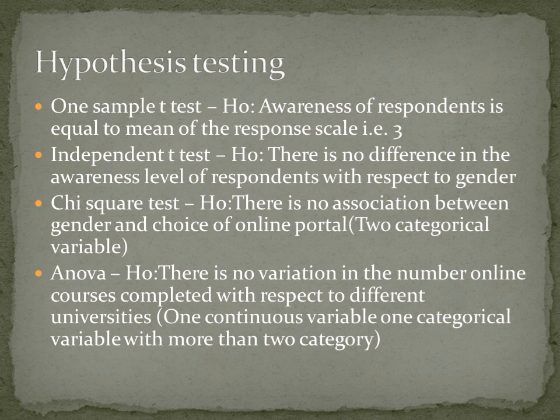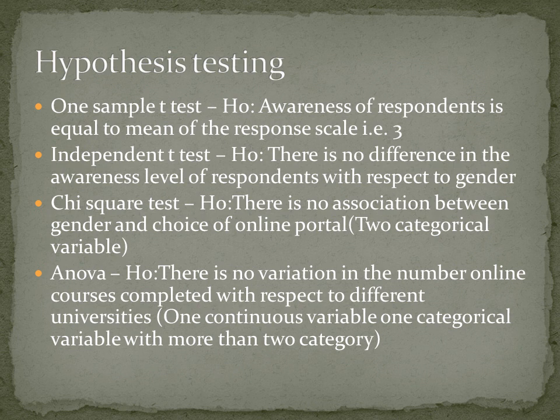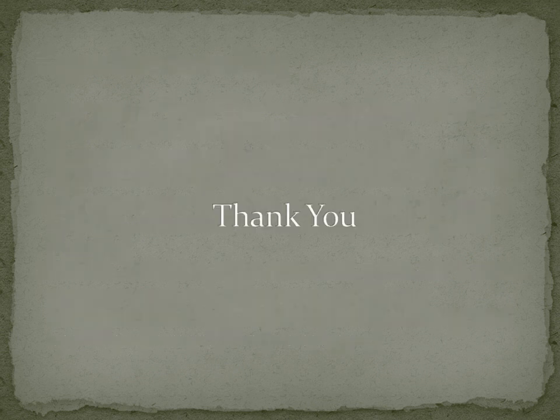You can also use ANOVA, where the null hypothesis is: there is no variation in the number of online courses completed with respect to different universities. ANOVA is used when there is one continuous variable and one categorical variable with more than two categories. With only two categories you use an independent t-test, but here we use ANOVA because universities represent more than two categories — hence analysis of variance.